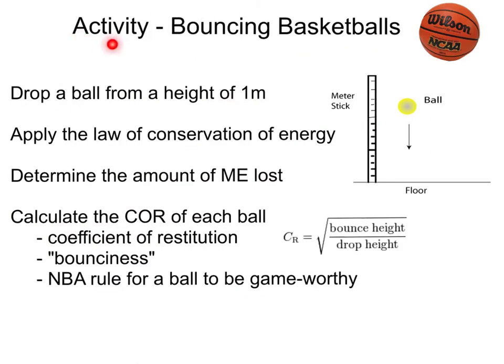Now you are ready for the in-class activity of bouncing basketballs. In class you will drop a ball from a height of 1 meter, measured with a meter stick. You will apply the law of conservation of energy and determine what types of energy the ball has when you are holding it, as it is falling, and as it makes impact with the floor. You will then determine the amount of mechanical energy lost and calculate the COR — the coefficient of restitution — also known as the bounciness.